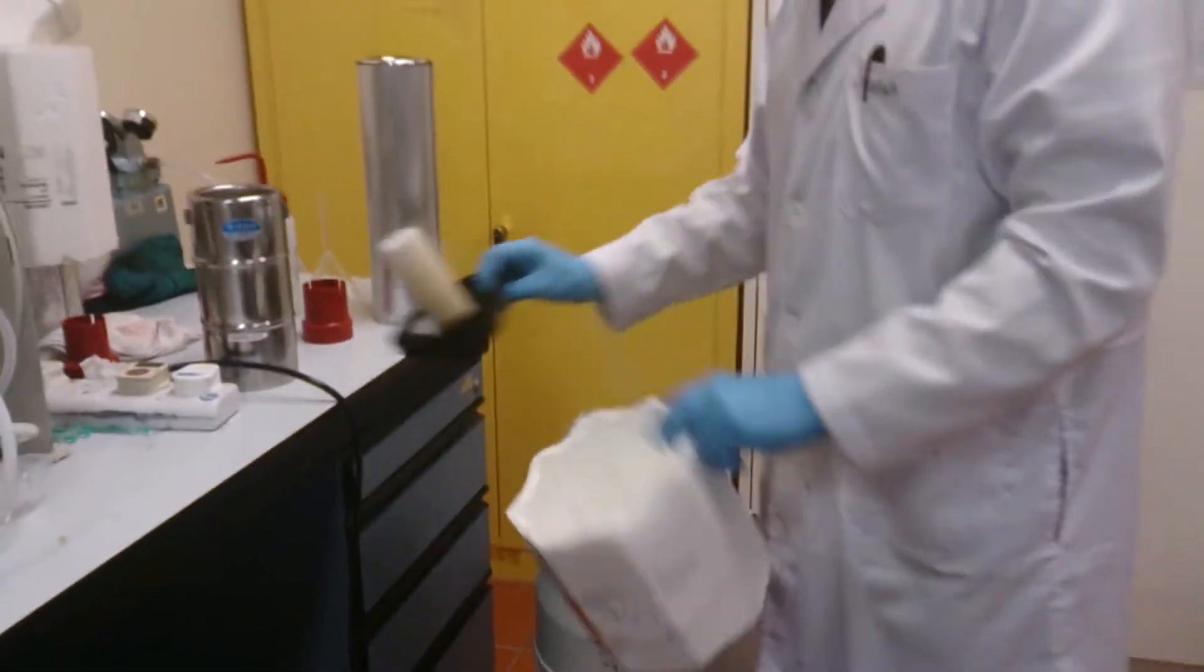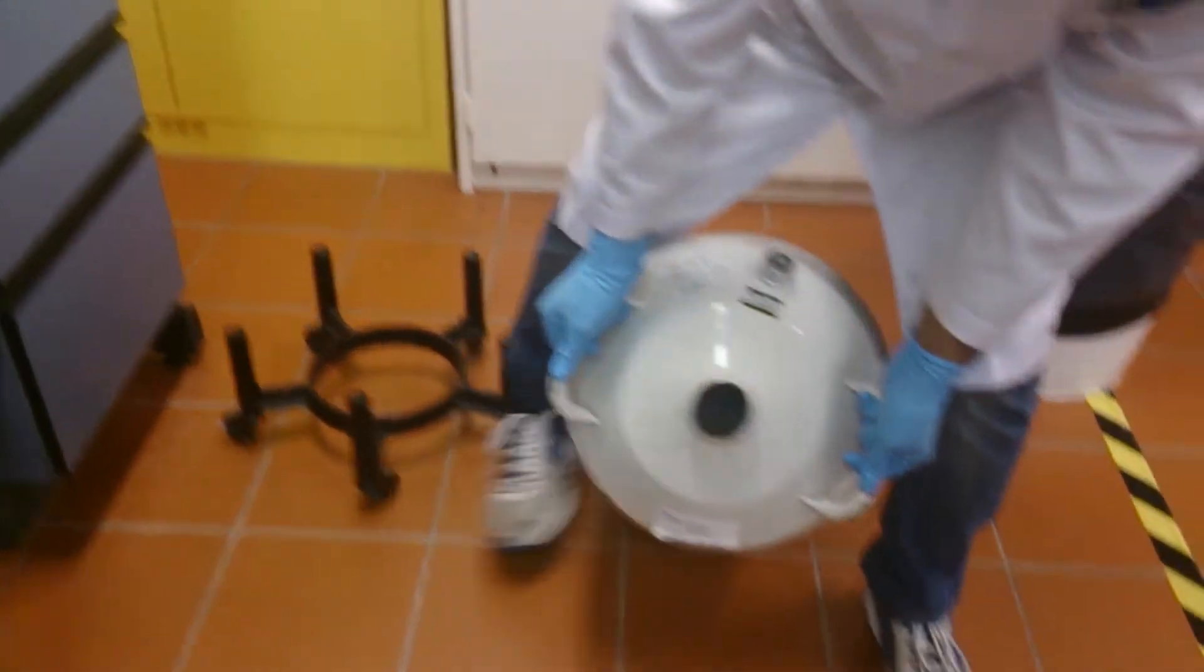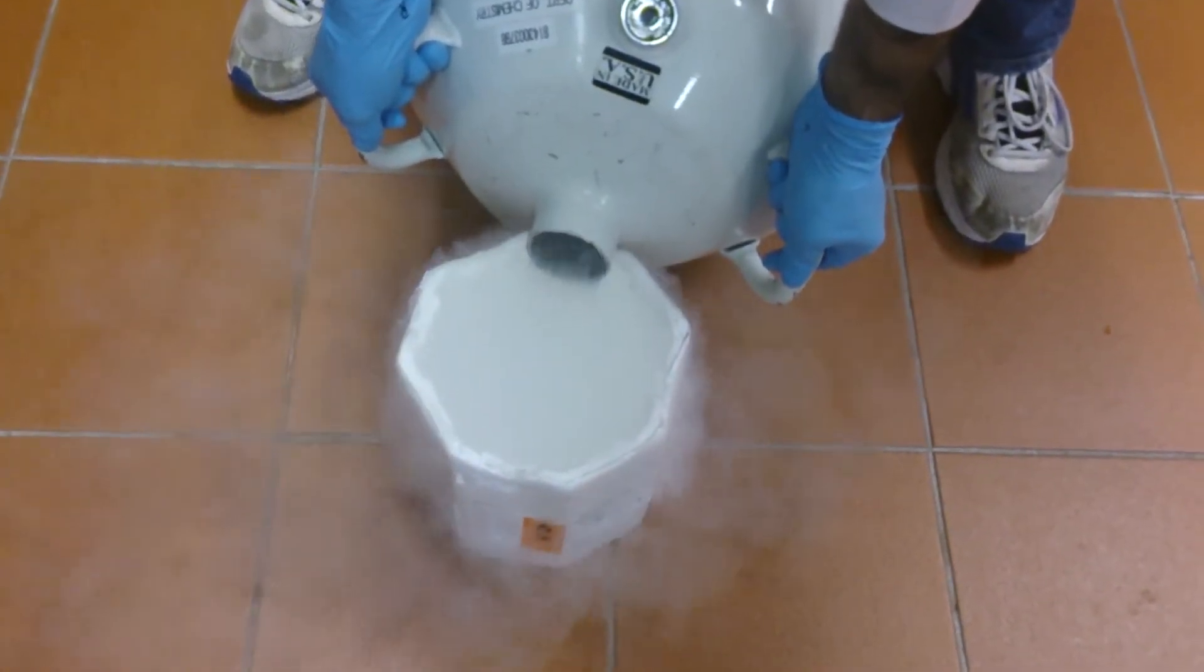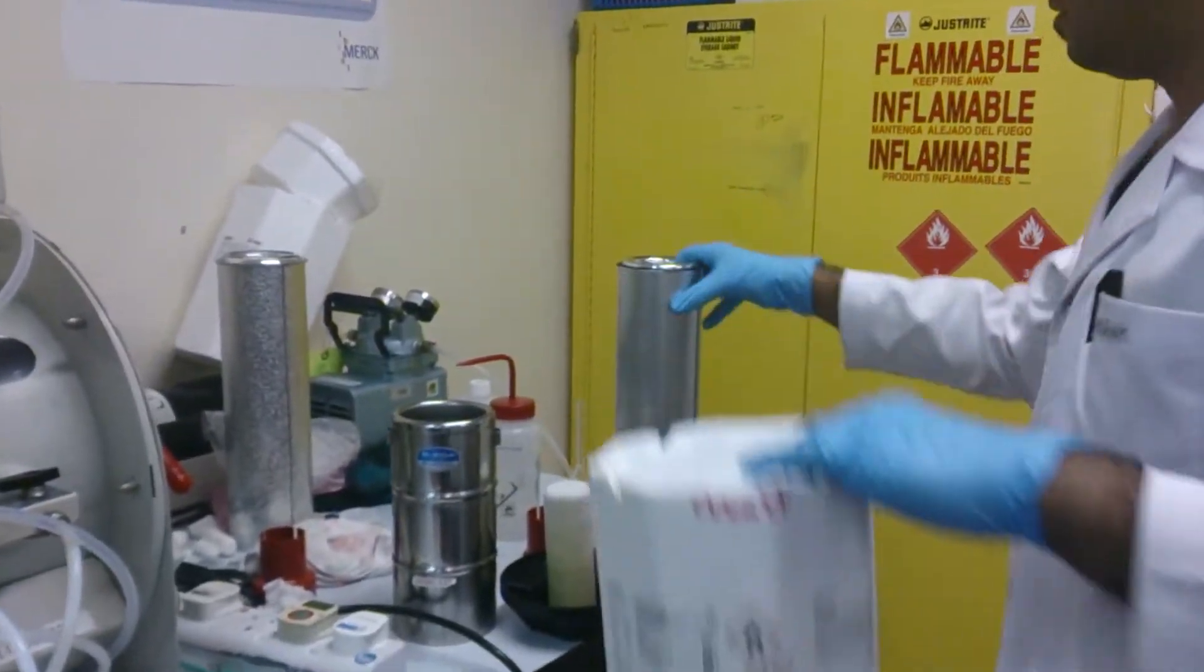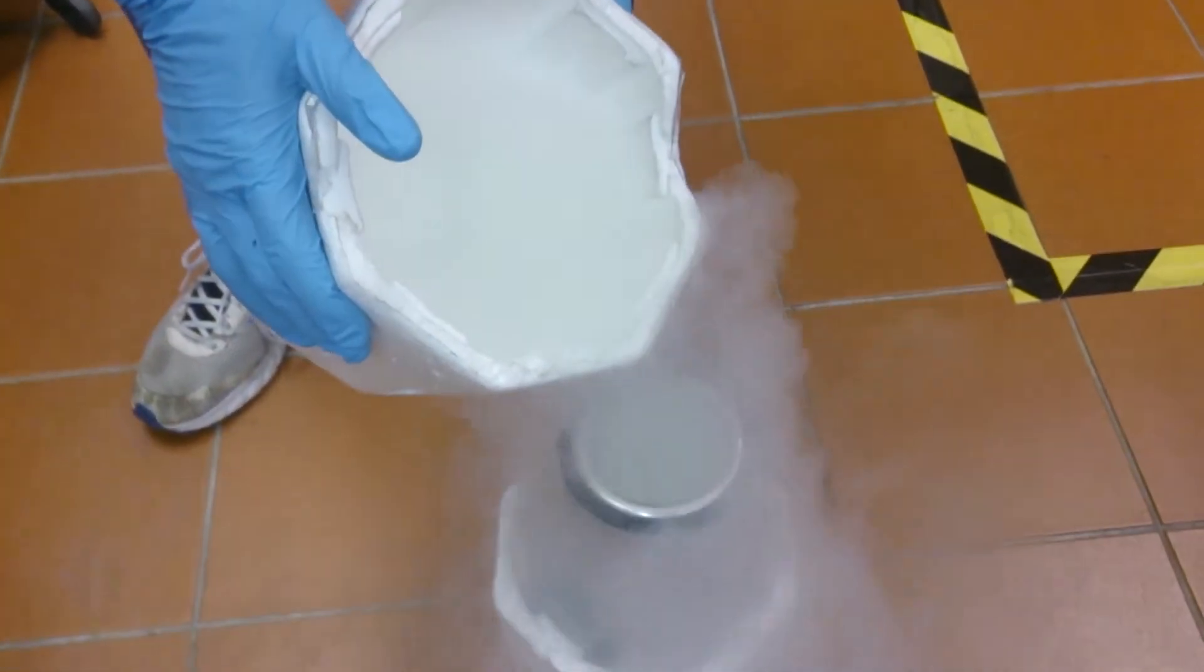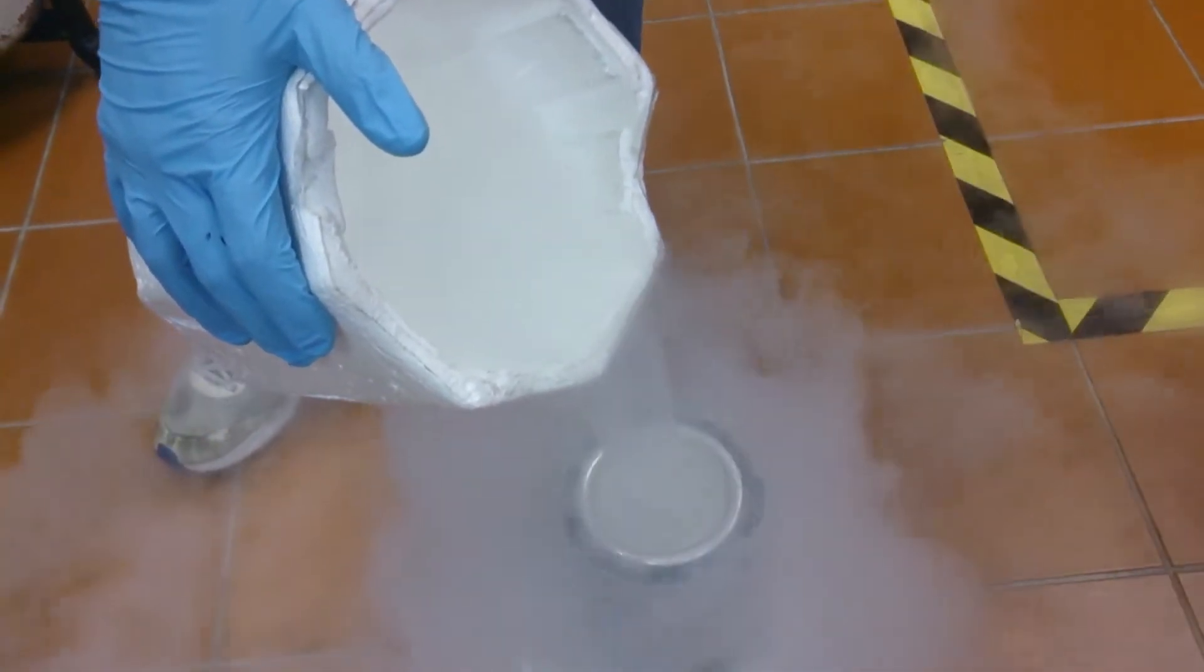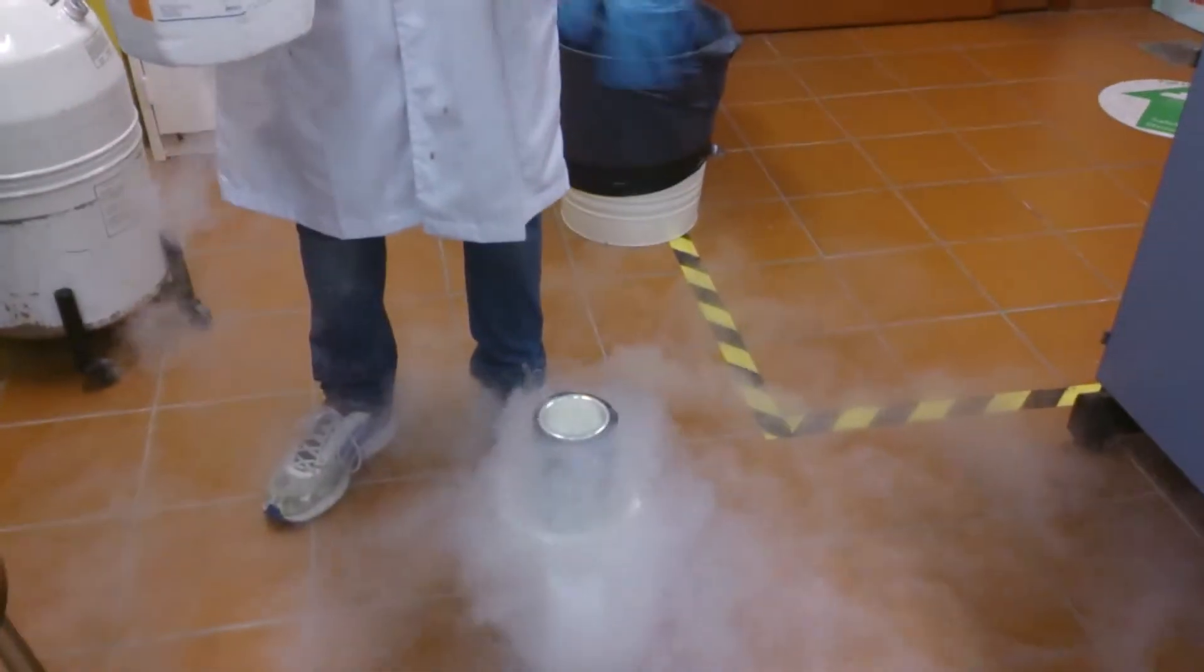This is the liquid nitrogen cylinder. Firstly pour it into this. This is a Dewar flask, we pour the liquid nitrogen into this Dewar flask very carefully. After filling it, we need to leave it for like 30 seconds so that the level stabilizes and the liquid nitrogen boils off.